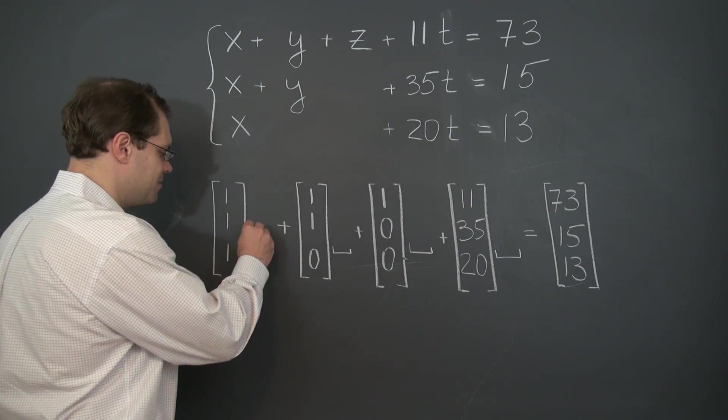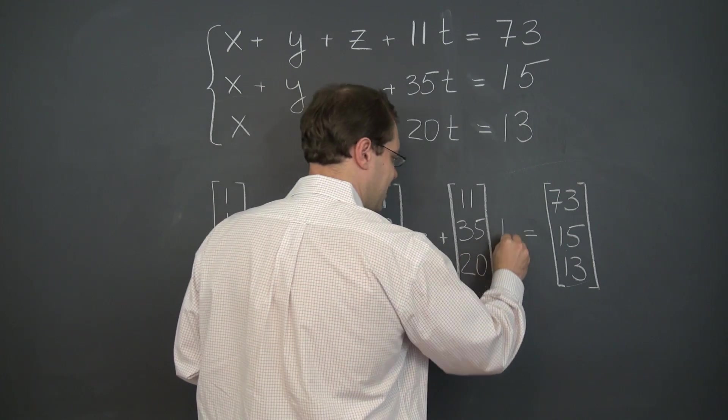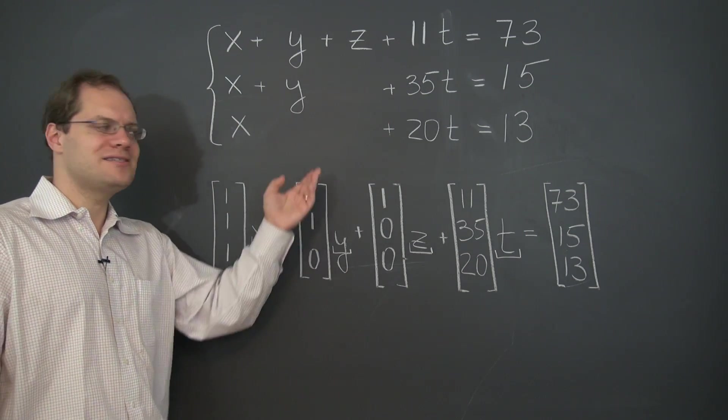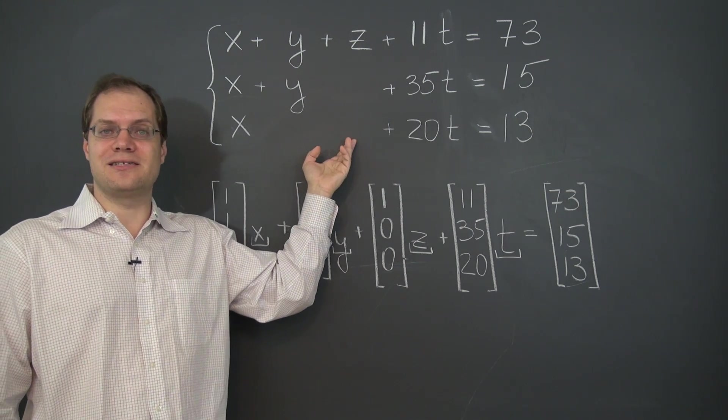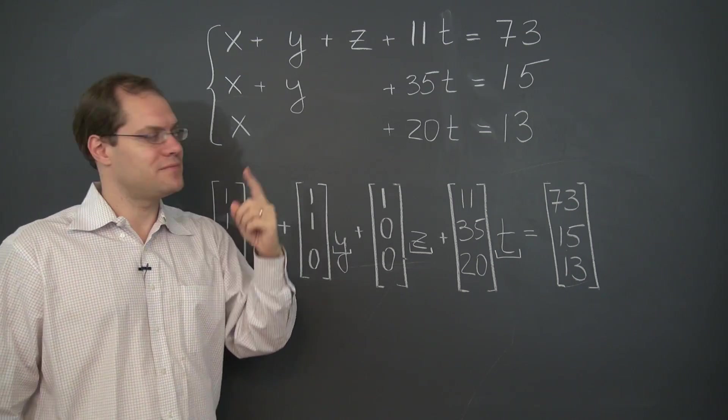And if we just name them x, y, z, and t, you will see that this decomposition problem is exactly equivalent to this linear system. Because to find this linear system is to find x, y, z, and t such that number one,